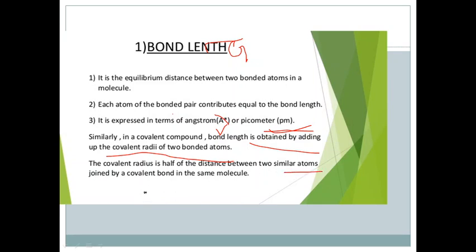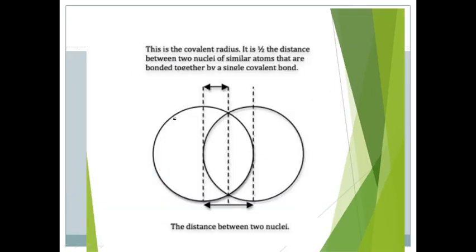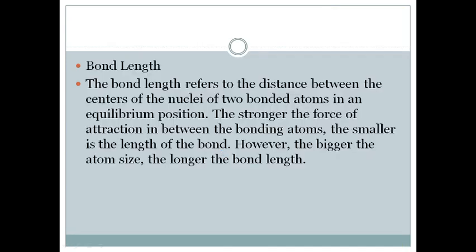The covalent radius is half of the distance between two similar atoms joined by a covalent bond. So one atom's covalent radius plus another atom's covalent radius—that is, the distance between the two nuclei to form a covalent bond—is the bond length.